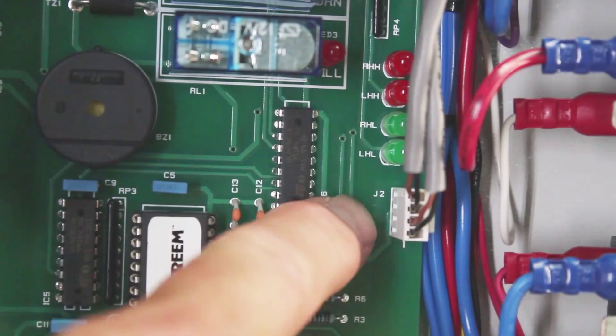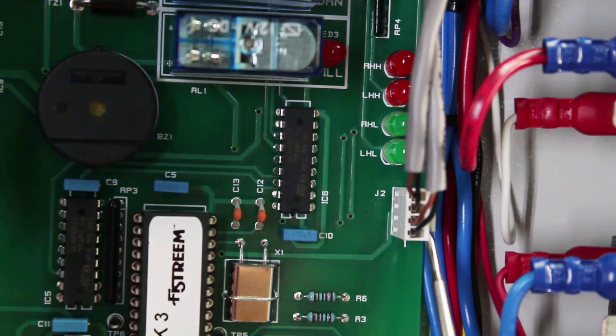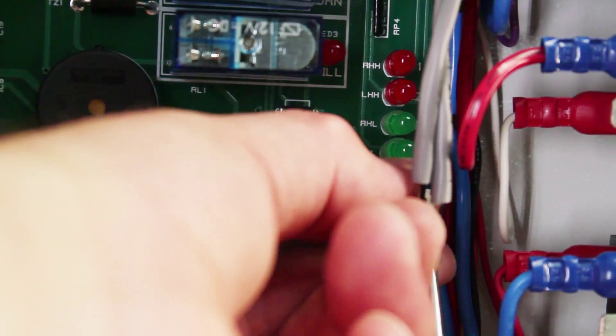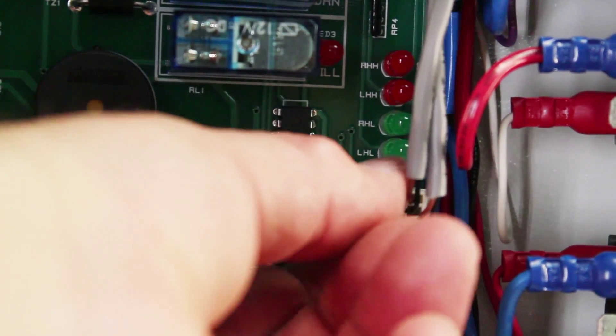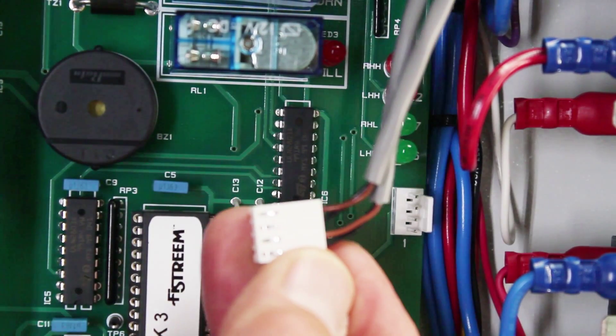The thermistor connection is right here. The connector is J2. It's got a clip on the side that keeps the connector from being pulled out. So it's a retaining clip, so you need to push on the side of the retaining clip to release it and then simply pull out on the thermistor.